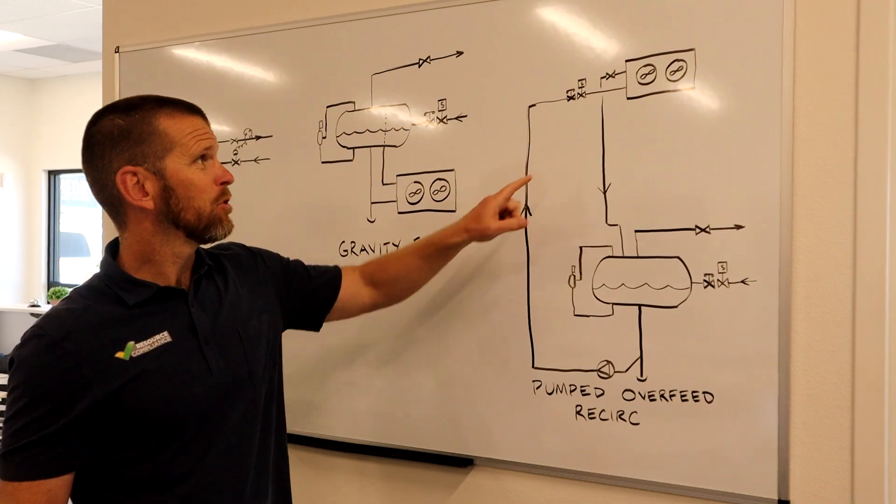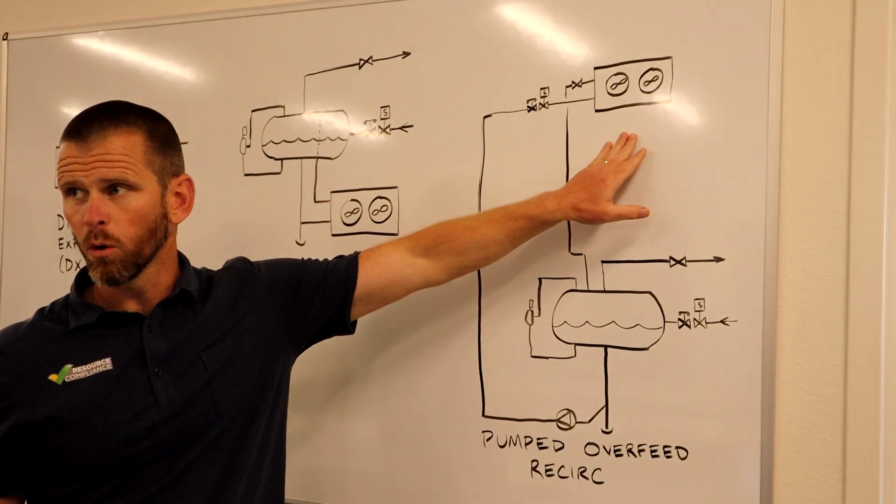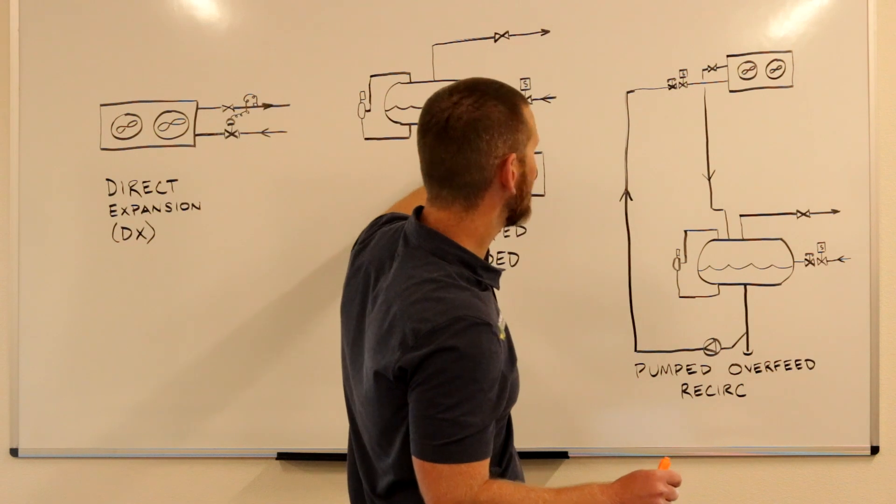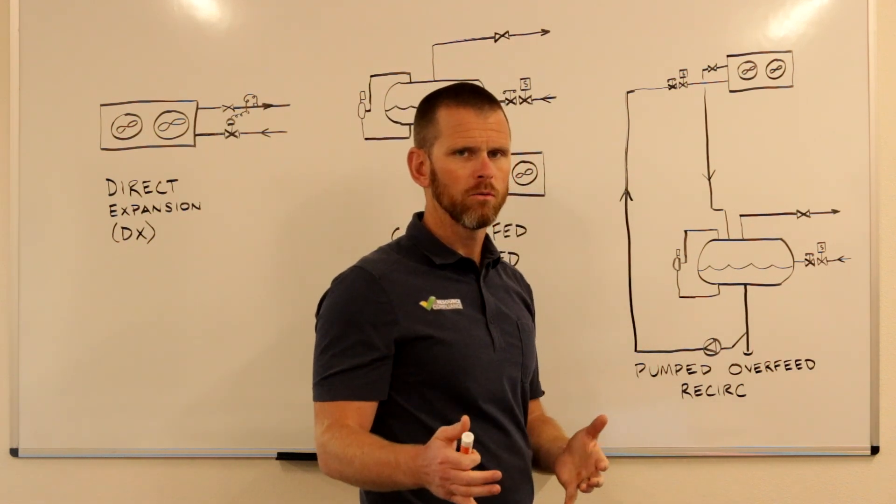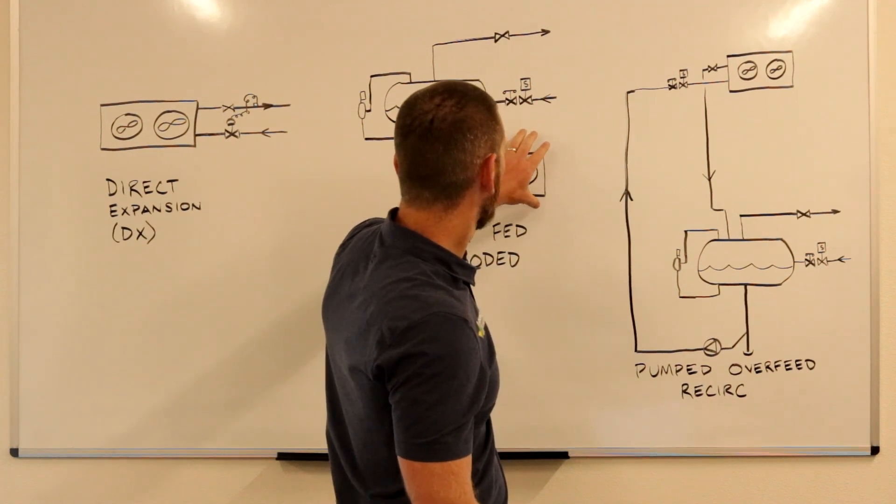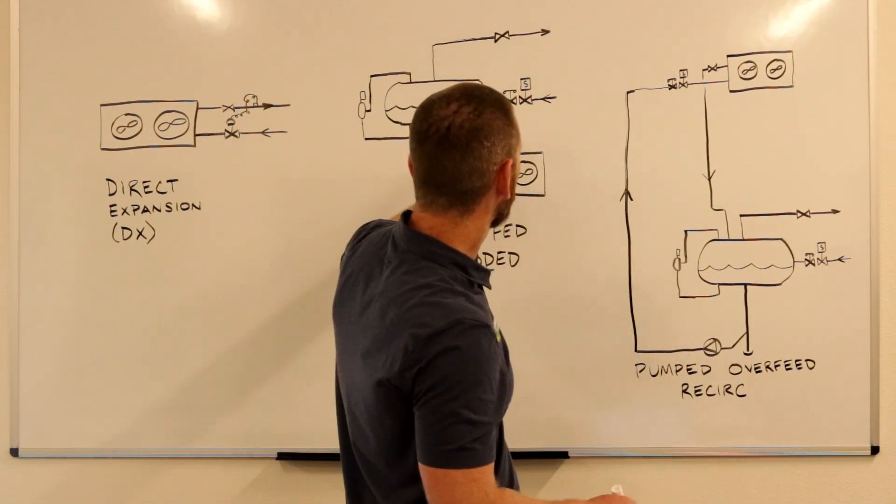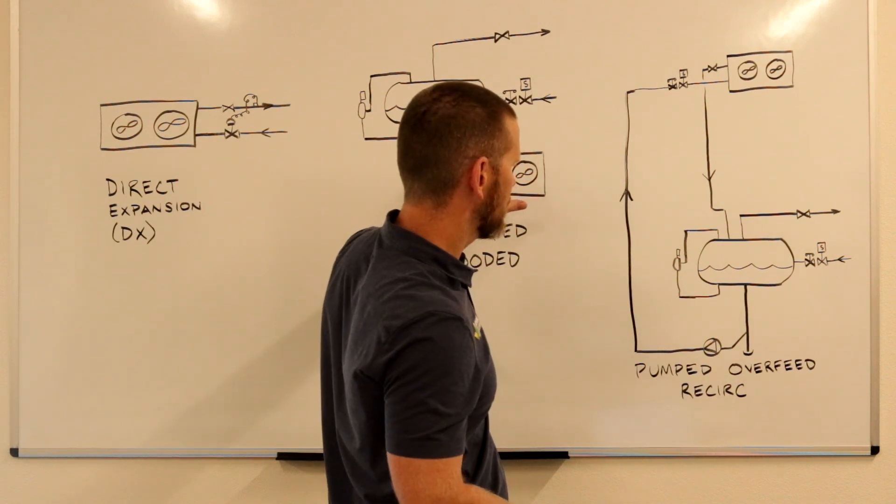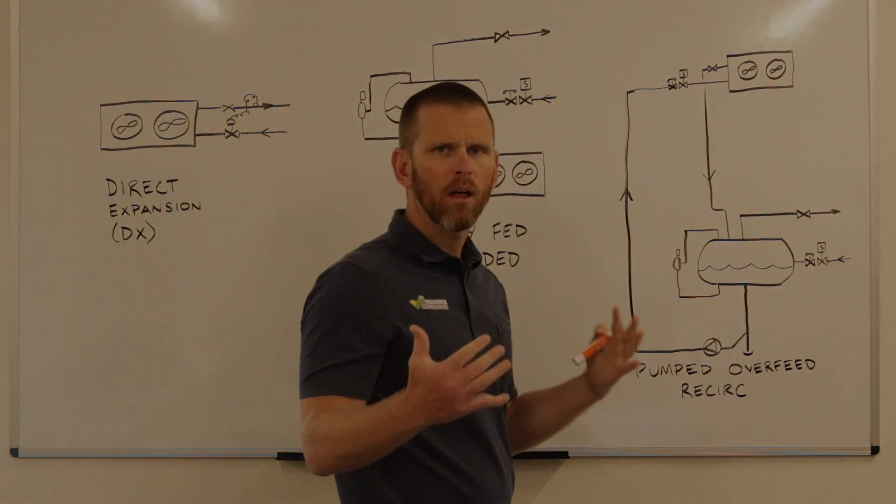The downside of this system is you don't get quite as precise of temperature control compared to a flooded system when we're talking about individual rooms or zones. Having a surge drum per zone or per room allows you to precisely set a temperature in a flooded system, whereas the recirc systems, you don't have quite the same level of control.